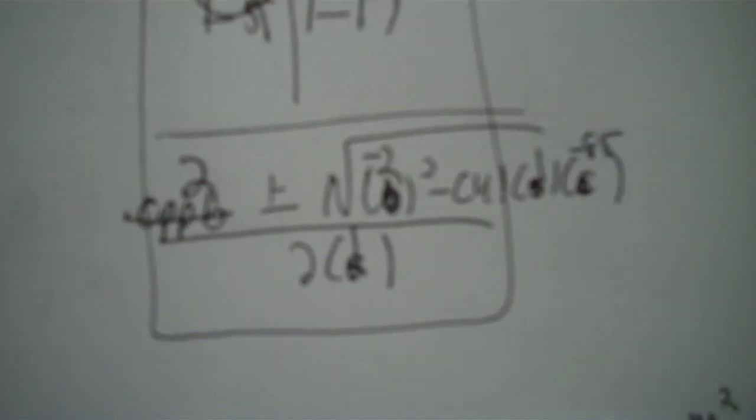Quadratic formula: opposite of B, plus or minus square root of B squared minus 4AC, over 2A. ABC is now from the factored equation — not the original. Opposite of B: positive 2. B inside the square root is negative 2. A is 1, C is negative 85. Down here, A is 1, so 2 times 1 is 2. That two you factored out doesn't matter — it doesn't have a variable, so it's irrelevant.